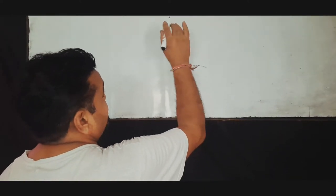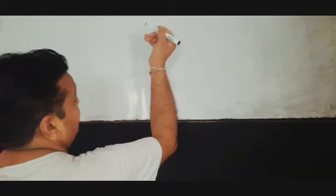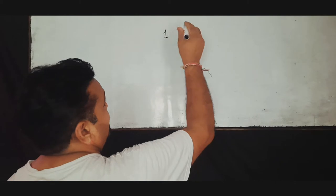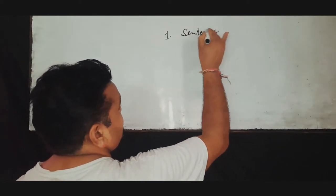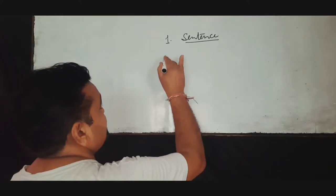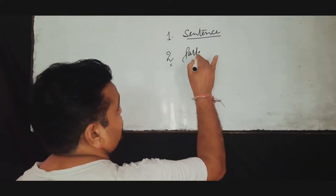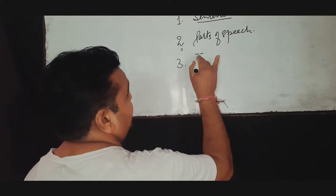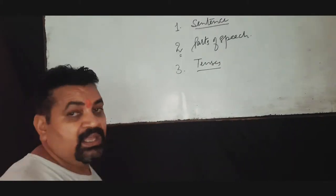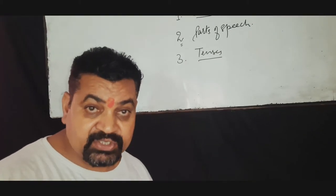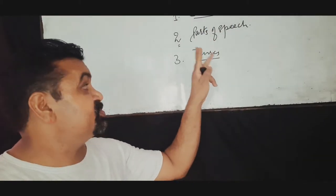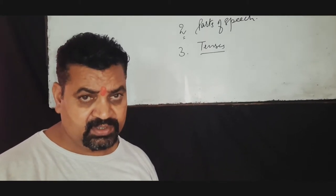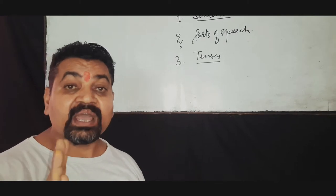We study main points from grammar. First point: sentence. Second point: parts of speech. And the third one is tenses. If we have the basic knowledge of sentence, parts of speech, and tenses, then we can speak effective English. We can read, write, and speak accurately.